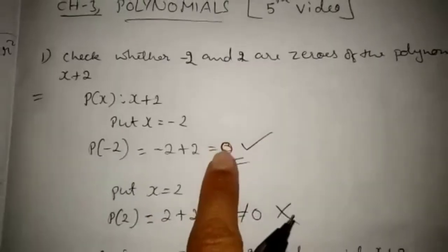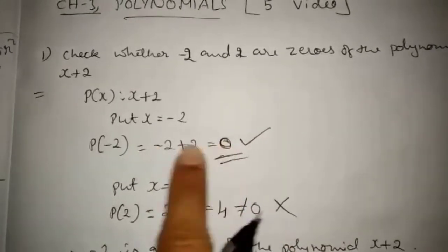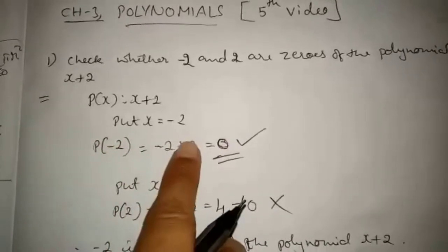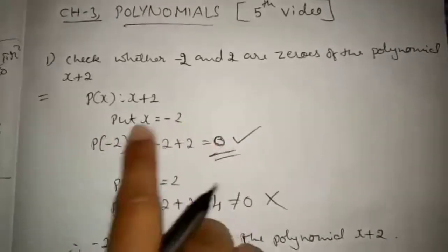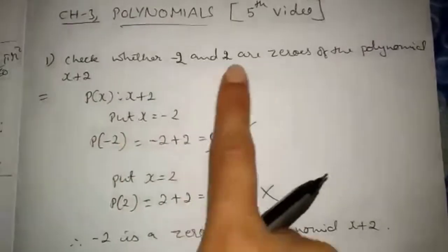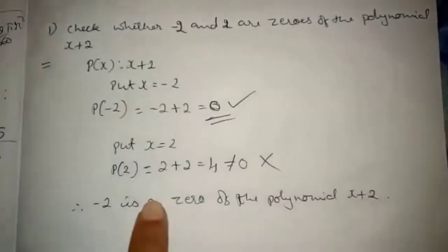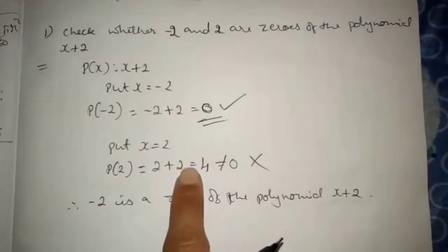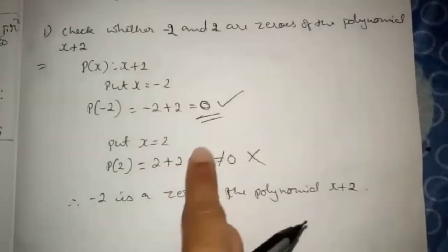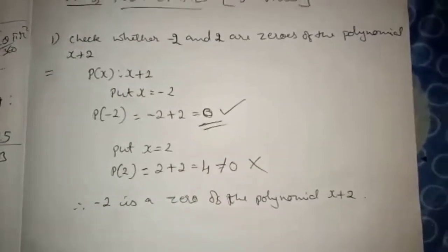If you get zero as the answer then we can say that the given number is a zero of that polynomial. So minus 2 is the zero of the polynomial x plus 2, but 2 is not the zero of the polynomial because the last answer is not zero — it is 4.